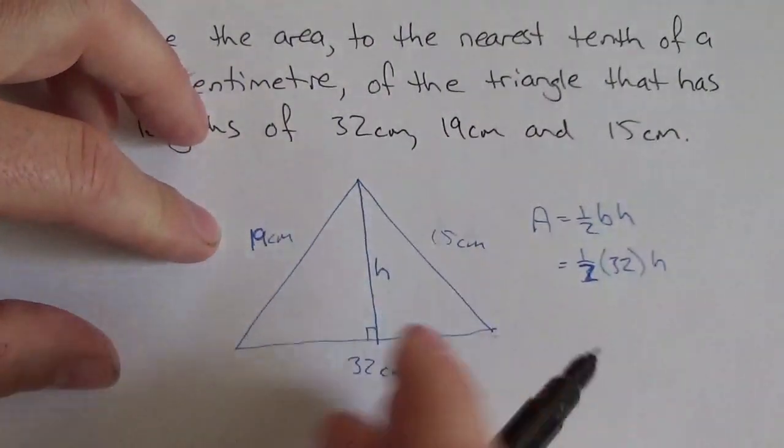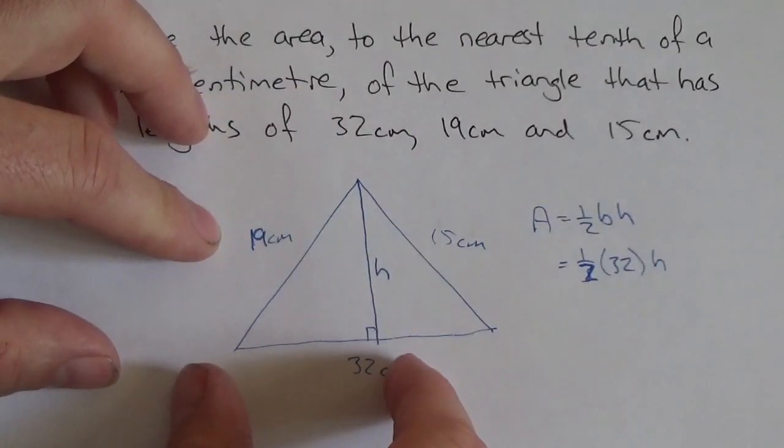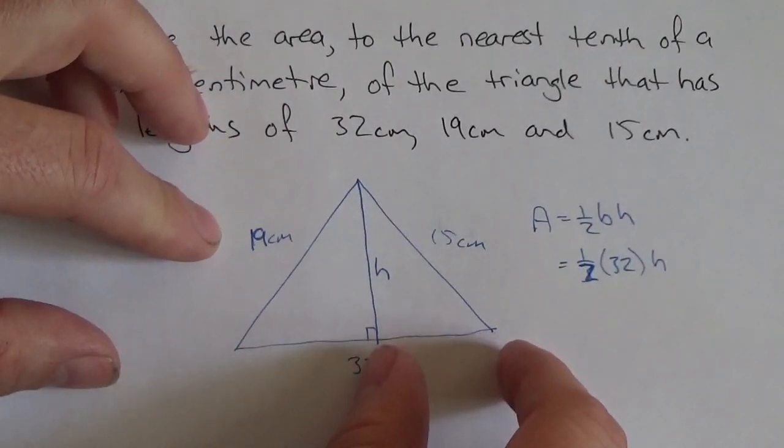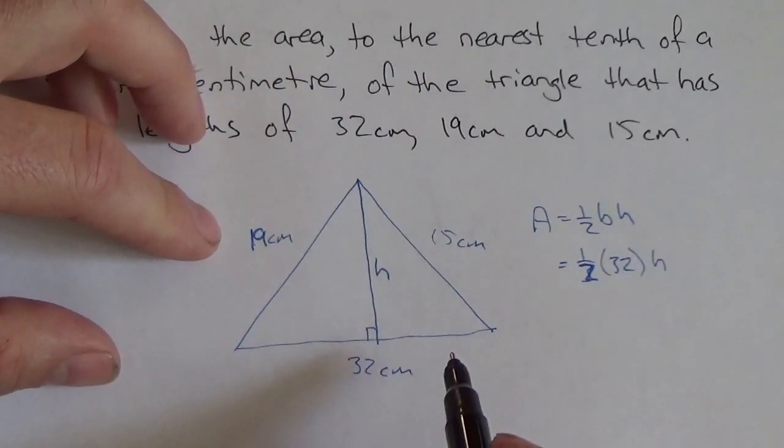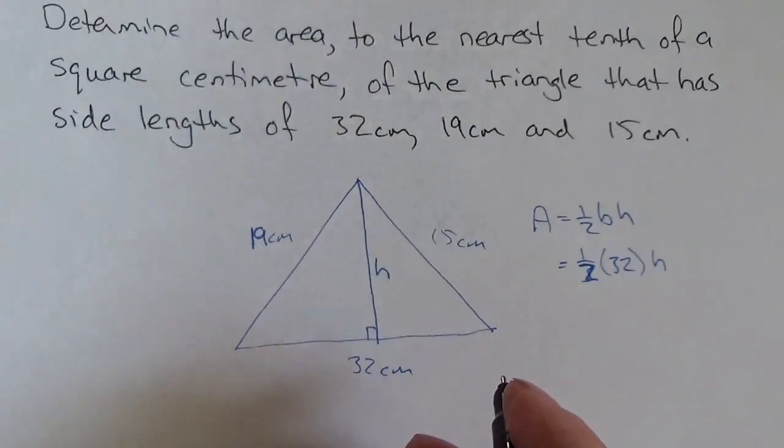So that altitude is actually a little bit further over this way than it is this way. So this is going to be a little bit more than 16. This will be a little bit less than 16. So that's not going to work.